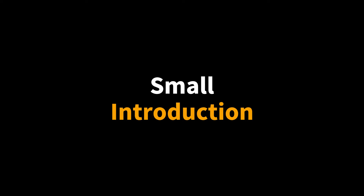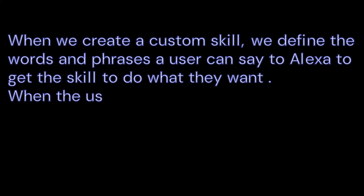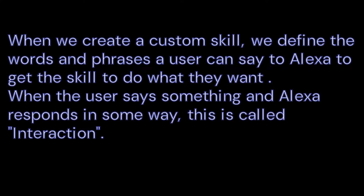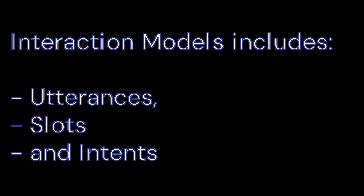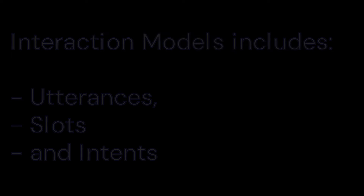We start with a small introduction. When we create a custom skill, we define the words and phrases a user can say to Alexa to get the skill to do what they want, within the scope of the skill, of course. When the user says something and Alexa responds in some way, this is called an interaction. Interaction models include utterances, slots, and intents.